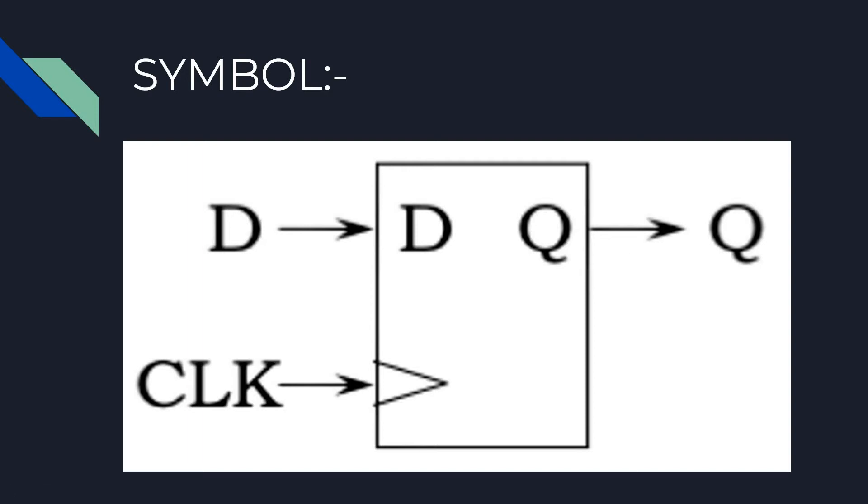At the rising transition from low to high, from 0 to 1 transition of the clock input, the register samples the value of the D input and stores the value until the next rising clock edge. The Q output is simply the value stored in the register.